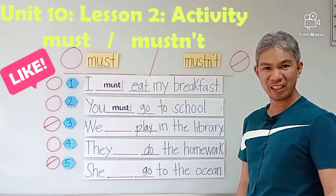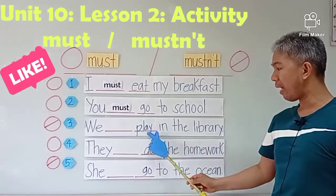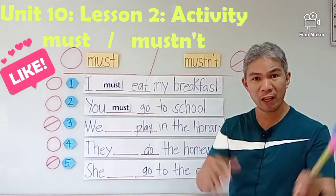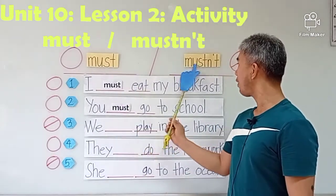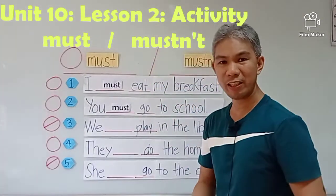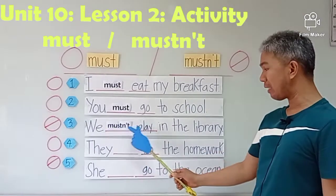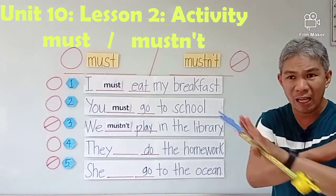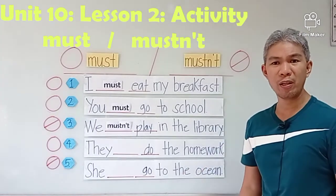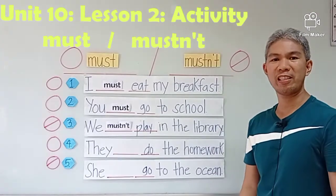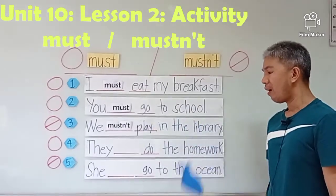Number three — we must or mustn't play in the library. Can you play at the library? No. So the correct answer is mustn't. We mustn't play in the library — you are not allowed to play inside the library. What are you going to do in the library? We are going to read books inside the library. We mustn't play in the library.